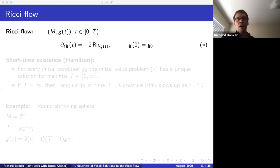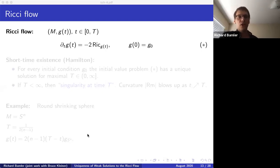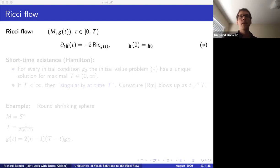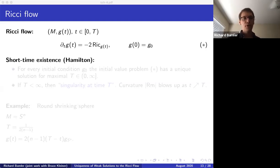A Ricci flow is a smooth family of Riemannian metrics on a manifold parameterized by a time parameter t on a time interval. The Ricci flow equation reads: the time derivative of the metric equals minus two times the Ricci curvature. In suitable local coordinates this looks like a heat equation on the metric, so the hope is that this flow improves or homogenizes a given metric. The equation is often coupled with an initial condition prescribing the metric at time zero.